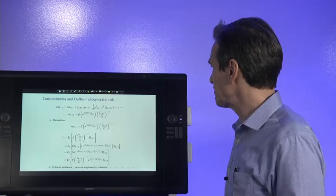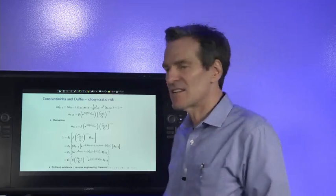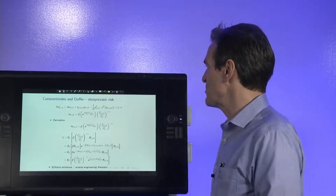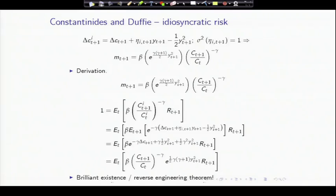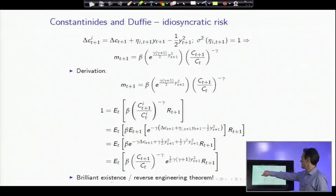Now this is such a simple model, we can actually go through the algebra in the lecture. Consumption growth—again, individual consumption growth is aggregate plus the individual shock, where Y is the variable. Higher Y gives us a higher volatility of the individual shock. Our goal is to get from there to this discount factor, which is the variance of the individual shocks. How do we get there?